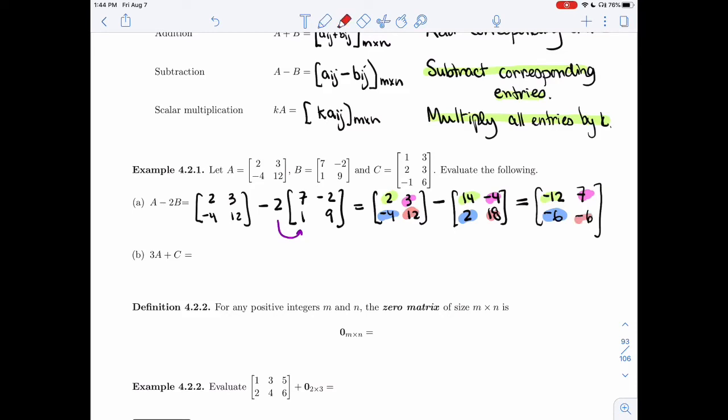All right, so it's entry by entry. You just have a different shape of entries that you had for vectors. All right, so let's try this one. I have 3 times A plus C.